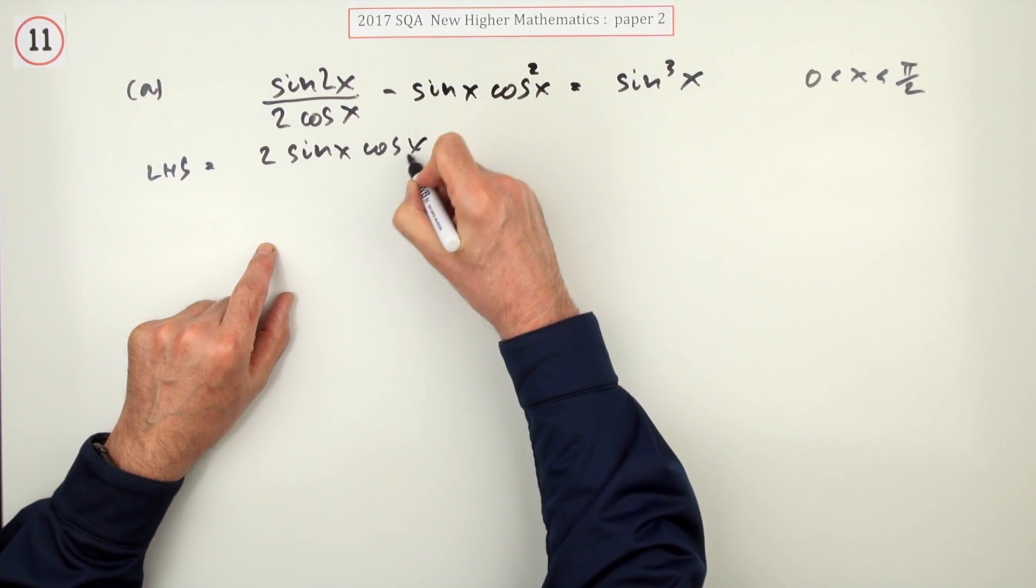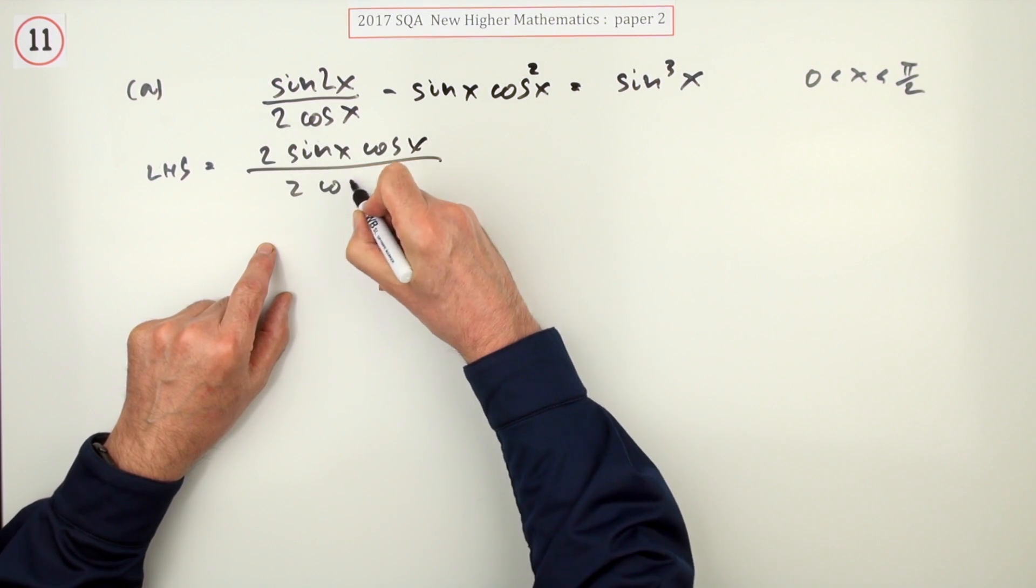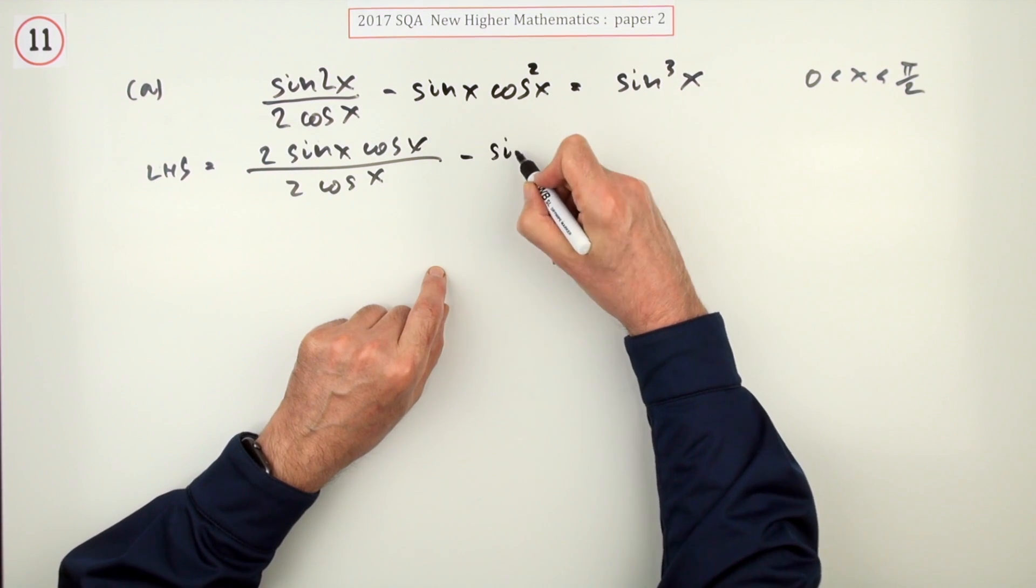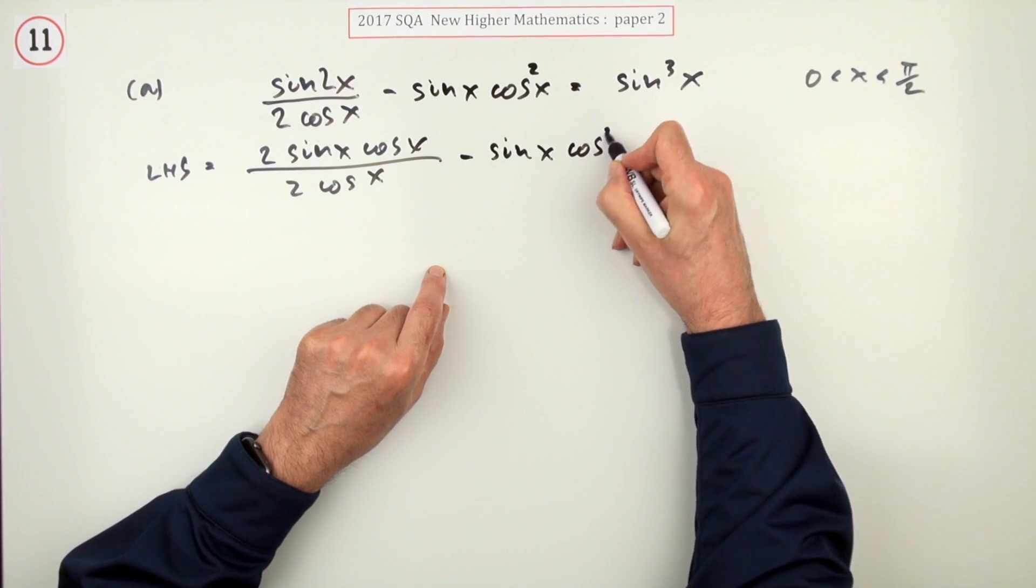Well, that's 2 sine x, cos x. And it's still over 2 cos x, very handy. Minus sine x, cos squared x.